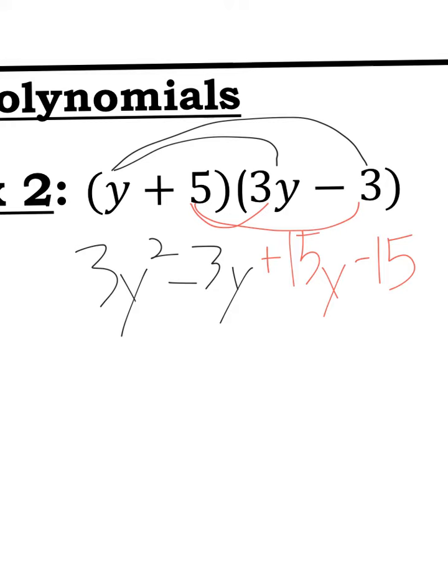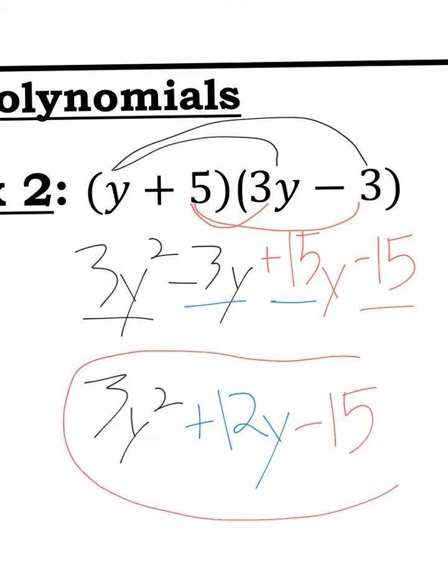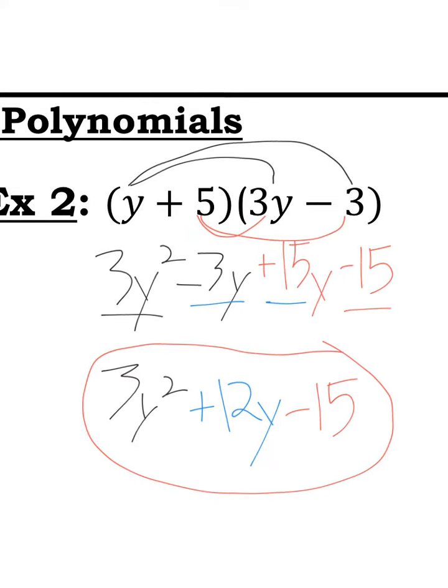And let's add like terms. Do I have any other 3y squareds? No. So 3y squared. Do I have any other y's? Yeah, right there in the middle. Negative 3y plus 15y. Well, that'll make 12y. And then I have minus 15 all by itself. So minus 15. And that is all I have to say about that. Let's move on to the next section.